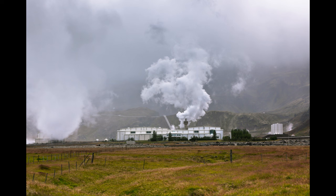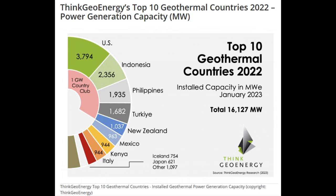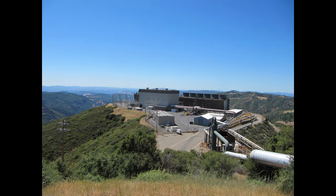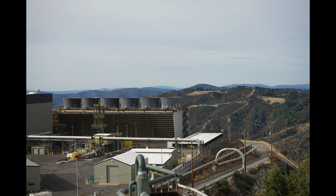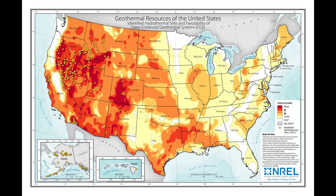Now let's talk about where in the U.S. geothermal energy is currently being used and where it can be used more. The U.S. is the largest producer of geothermal energy in the world; however, geothermal is not growing as fast in the U.S. as in Indonesia, and it's very possible that by 2030 Indonesia might be number one. For the United States, the largest geothermal plant is the Geysers in northern California, just north of wine country, and it's the largest geothermal complex in the world, producing 20 percent of all of California's renewable energy.